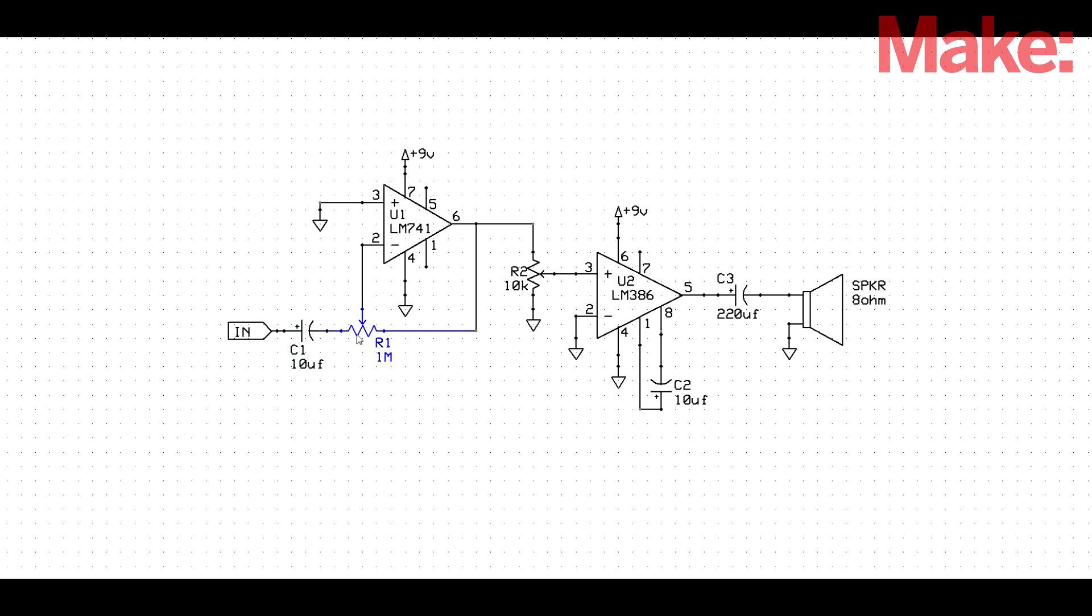R1 is a potentiometer used to control the gain of U1. From the output of U1, we have R2, another potentiometer, that controls how much of the signal output makes it to the audio amplifier. So in essence, it can be a volume control.